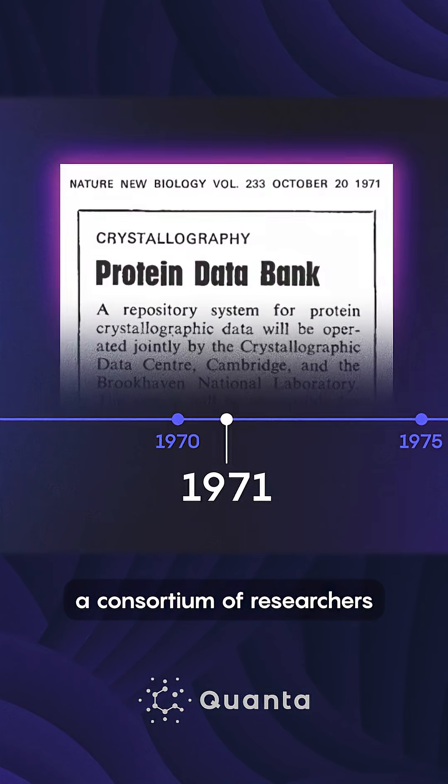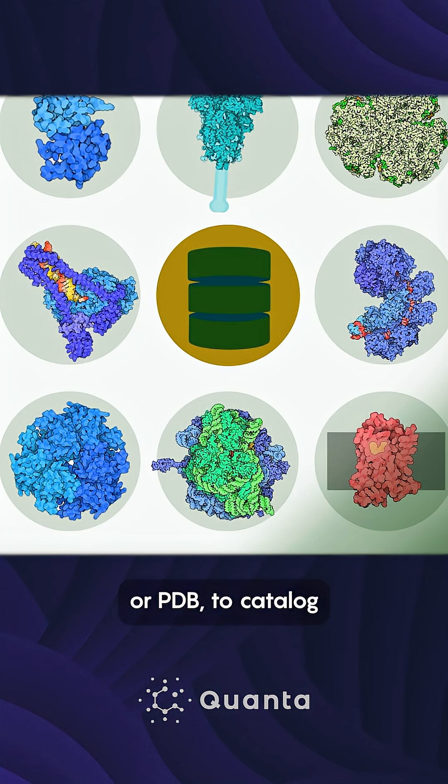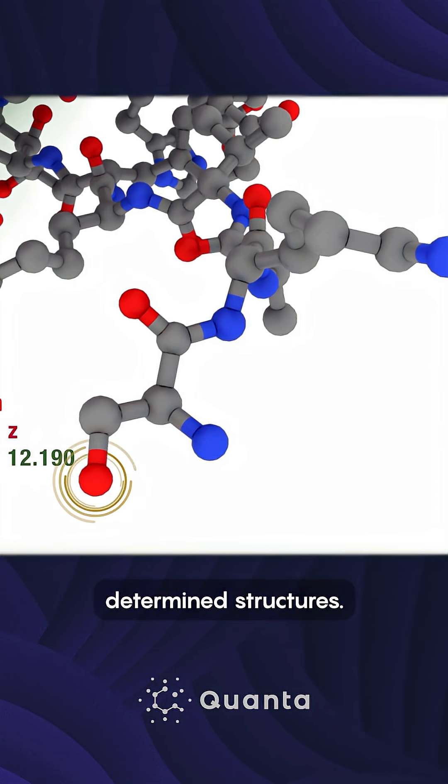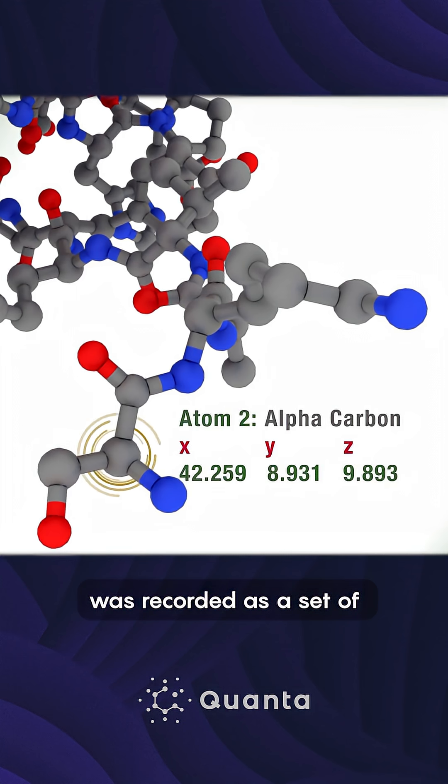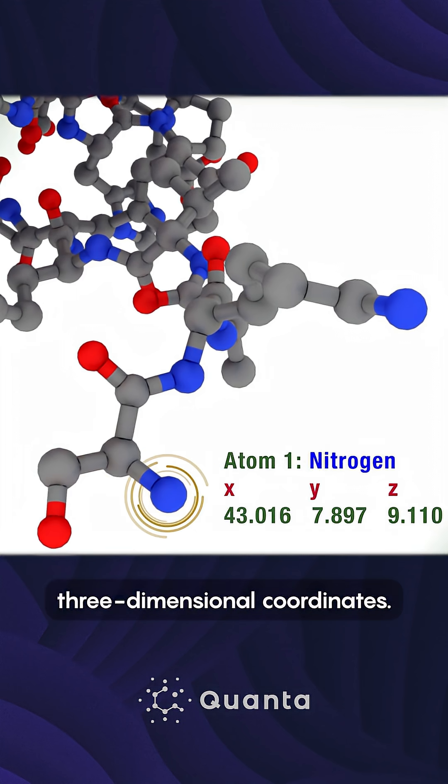In the 1970s, a consortium of researchers started the Protein Data Bank, or PDB, to catalogue determined structures. The location of each atom inside a protein's structure was recorded as a set of three-dimensional coordinates.